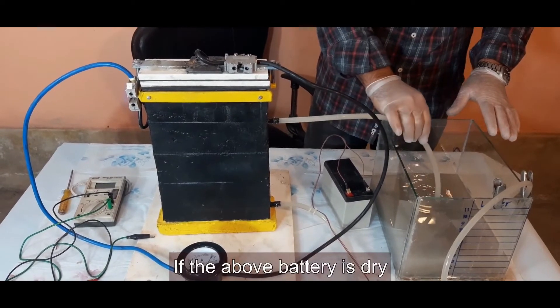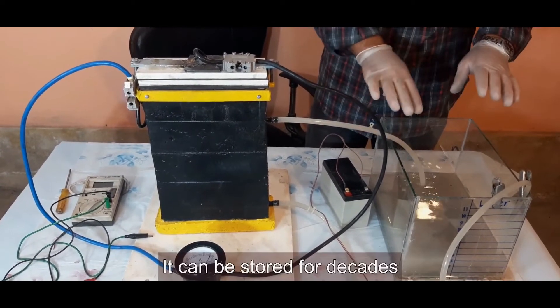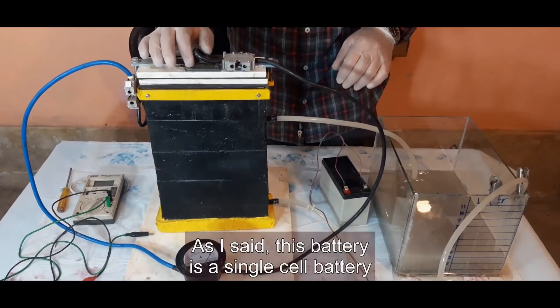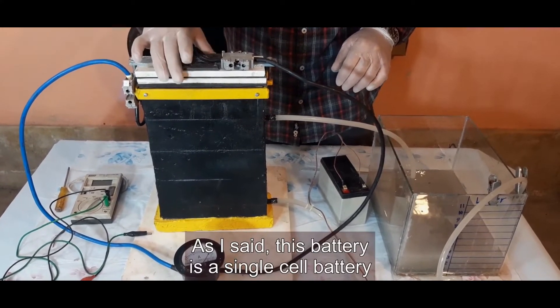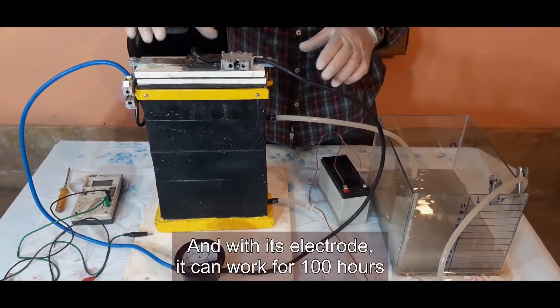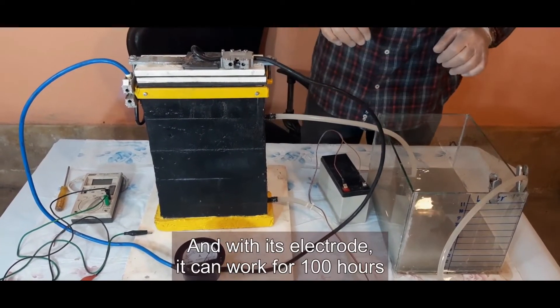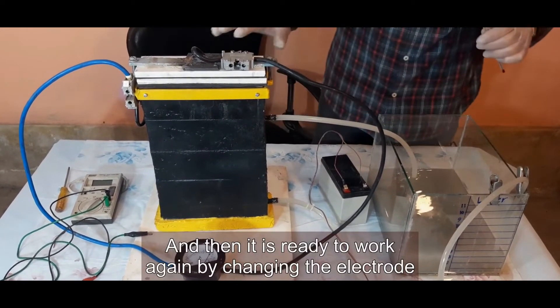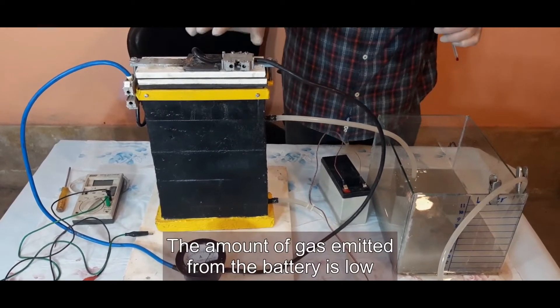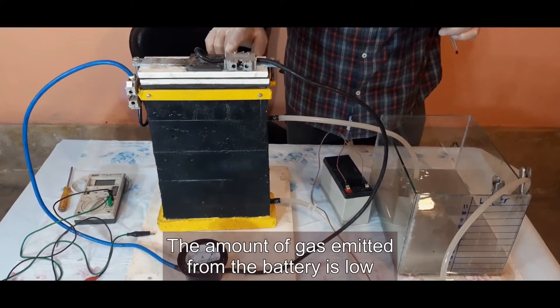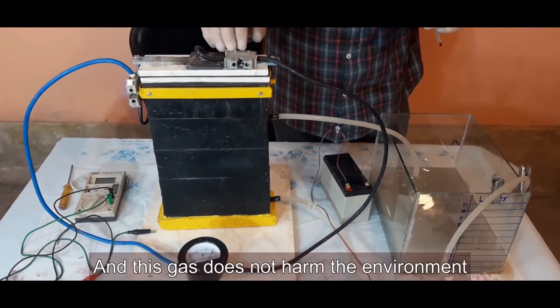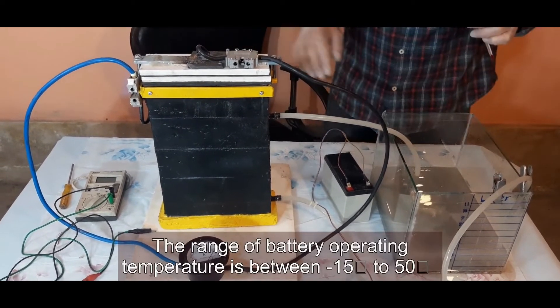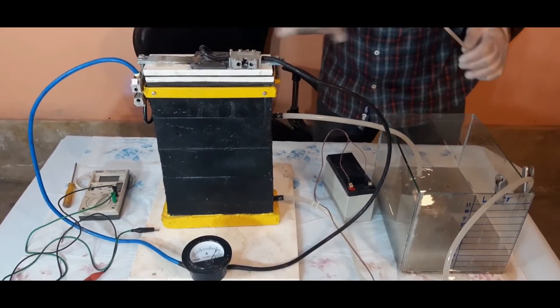If the battery is dry, it can be stored for decades because it has nothing to spoil. As I said, this battery is a single-cell battery. With its electrode, it can work for 100 hours, and then it is ready to work again by changing the electrode. The amount of gas emitted from the battery is low and does not harm the environment. The range of battery operating temperature is between minus 15 degrees Celsius to 50 degrees Celsius.